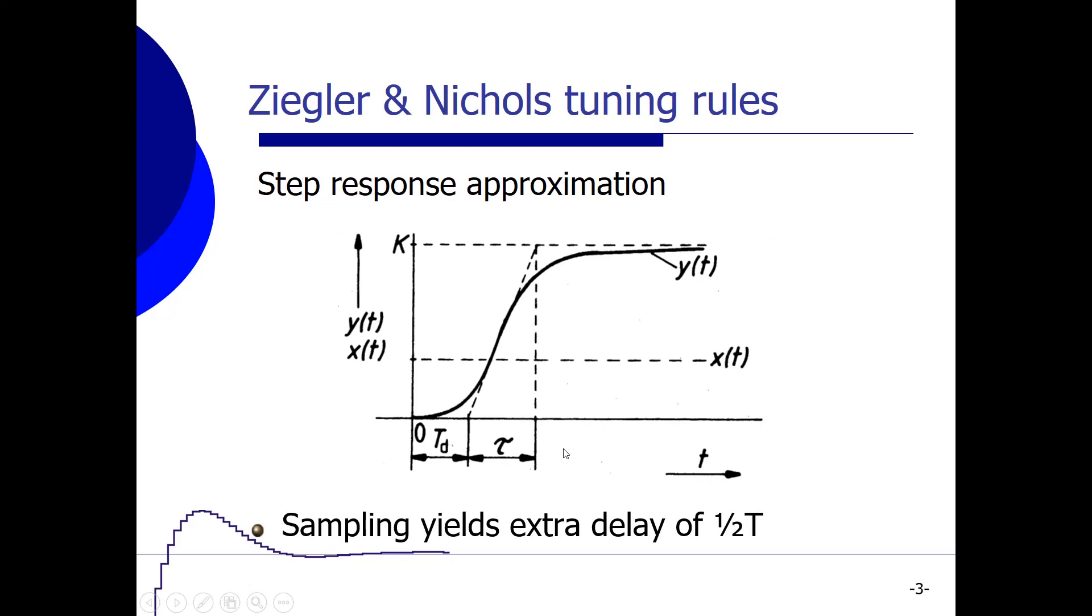When we use a discrete controller, we have to sample our system. And that sampling yields an extra delay time of 0.5 times the sample time, so 0.5 times T or T_s. So we have to use that extra delay in the Ziegler and Nichols tuning rules using that step response method.